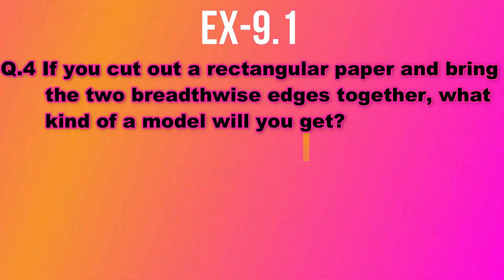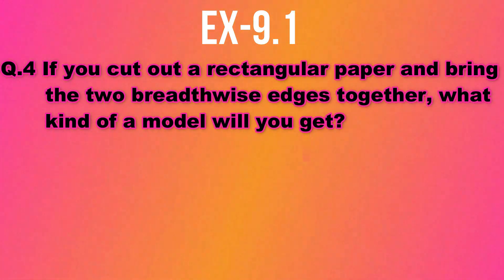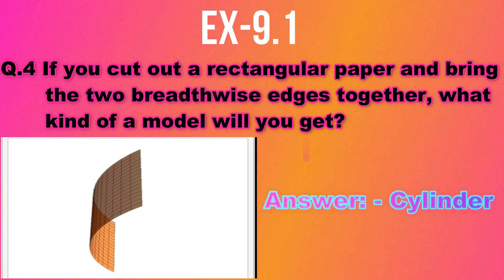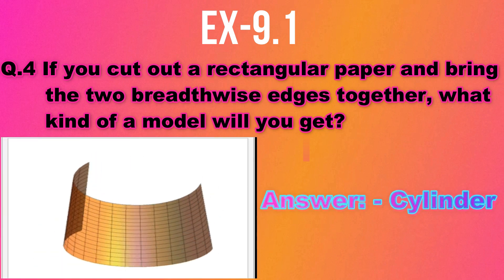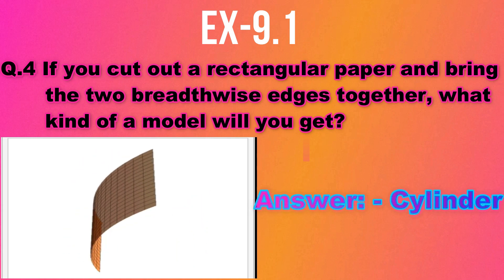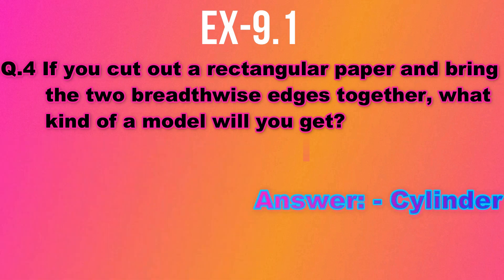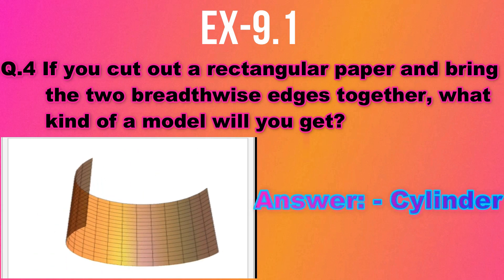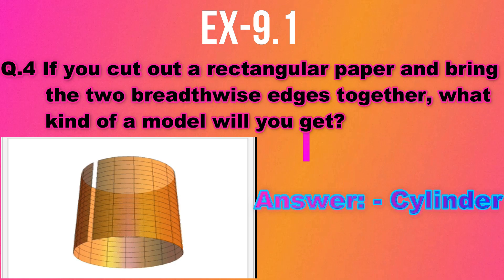Question number 4: If you cut out a rectangular paper and bring the two breadthwise edges together, what kind of model will you get? Here in the picture you can see that when a rectangular paper is folded, it is transformed into the shape of a cylinder. So the answer is cylinder.